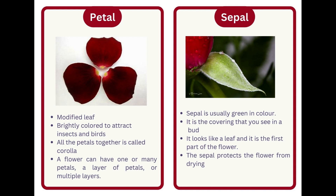Petal. A modified leaf. Brightly colored to attract insects and birds. All the petals together is called corolla. A flower can have one or many petals — a single layer of petals or multiple layers.